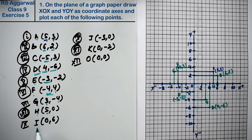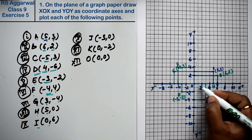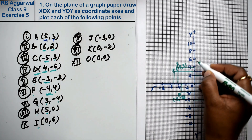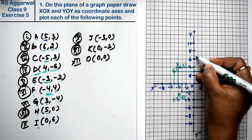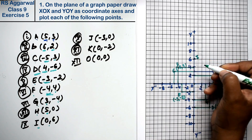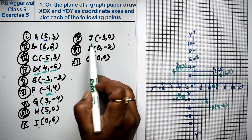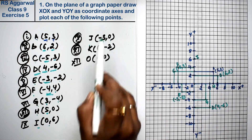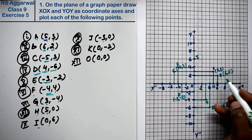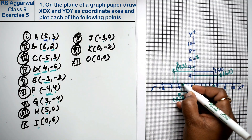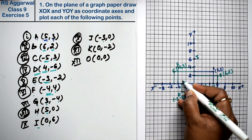Next, point I: x is 0 and y is 6. Since x is 0, the point lies on the y-axis. x=0 is here and y=6 is here. So this is point I at (0, 6). Similarly, point J: x is minus 3 and y is 0, so it lies on the negative x-axis. This is point J at (-3, 0).